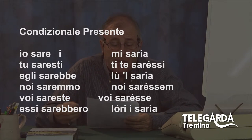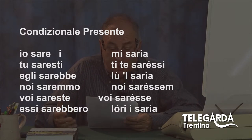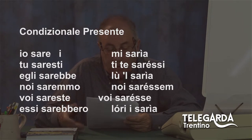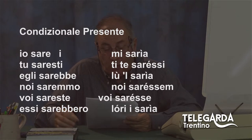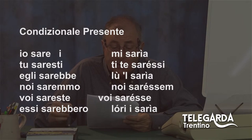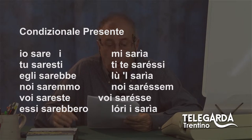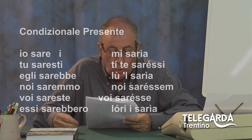In dialetto, io sarei: mi saria. Tu saresti: ti te saresti. Egli sarebbe: l'ul saria. Noi saremmo: noi saresem, con accento tonico sulla prima E che diventa accento fonico chiuso: noi saresem. Voi sareste: voi sarese, anche qua accento fonico chiuso sulla prima E. Essi sarebbero: lori i saria. Saria mi raccomando, con accento tonico sulla I. Quindi: mi saria, ti te saresti, l'ul saria, noi saresem, voi sareste, lori saria.